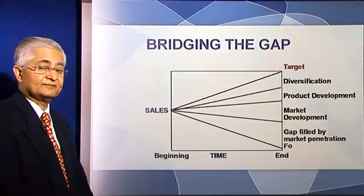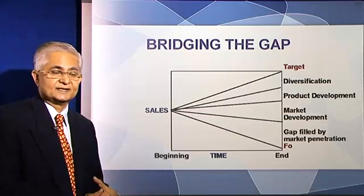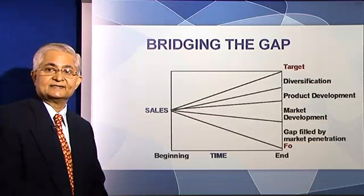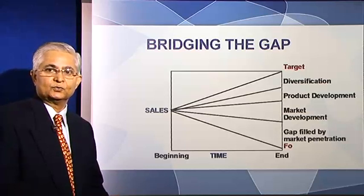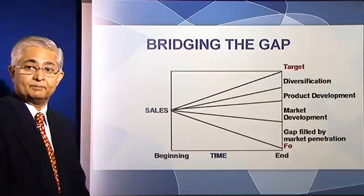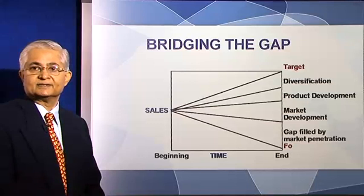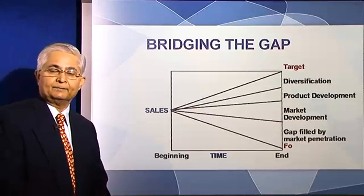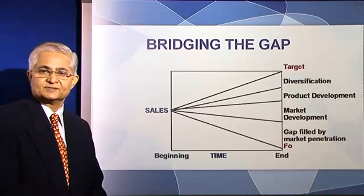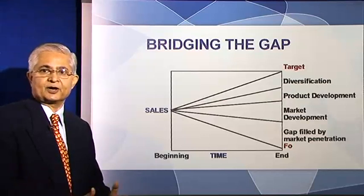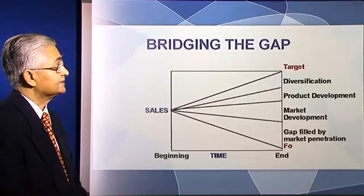Then you have product development, where the company looks internally and finds that it is in two or three models of a particular product, but there are say 10 models of that product available in the market and the company has not moved to the other seven models. So the company can expand its product presence from three to seven and bridge the sales gap.